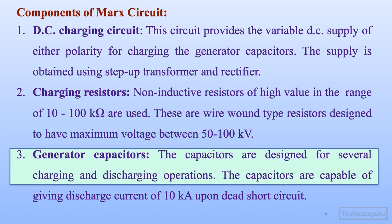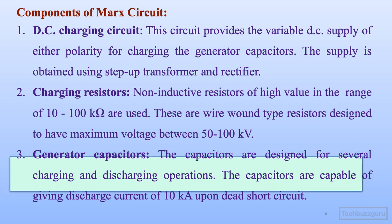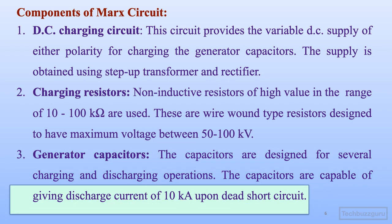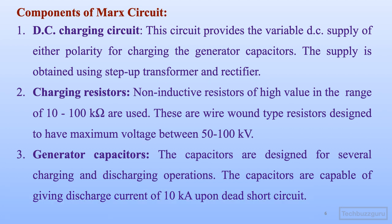The third element of the circuit are the generator capacitors. These are designed for several charging and discharging cycles and are capable of giving a discharge current of 10 kilo-amperes upon dead short circuit. This level of current is usually required for the testing of lightning arrestors or surge absorbers.